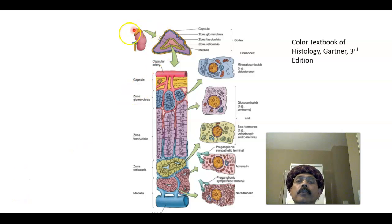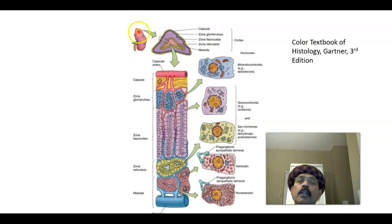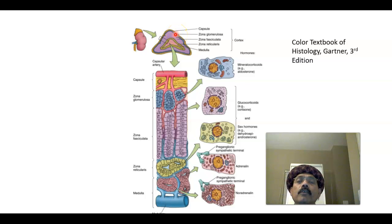This is the kidney again and the suprarenal gland is here. If we cut the suprarenal gland, we will get the cortex and medulla. The cortex has three layers: zona glomerulosa, zona fasciculata, and zona reticularis.